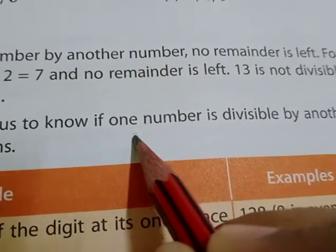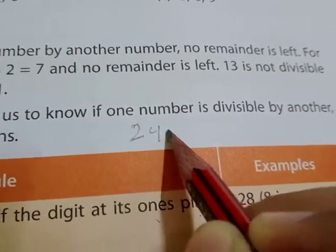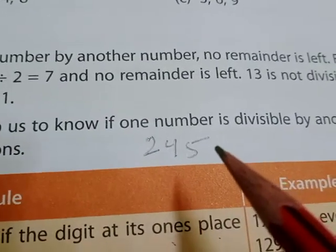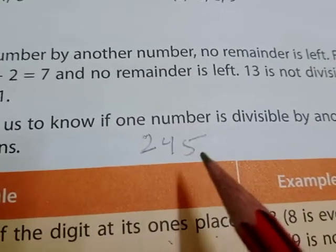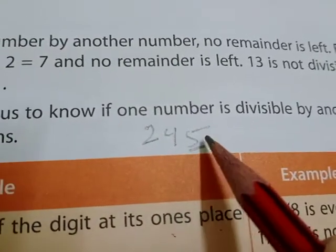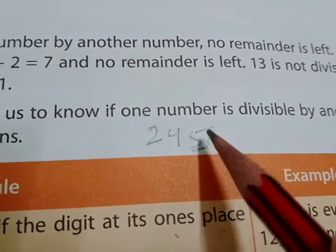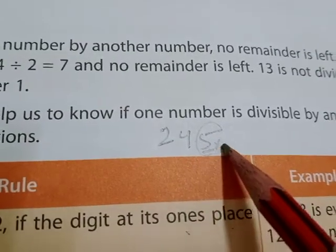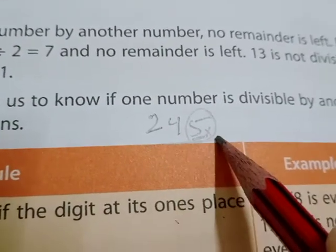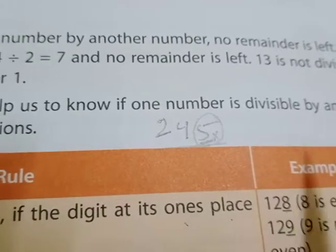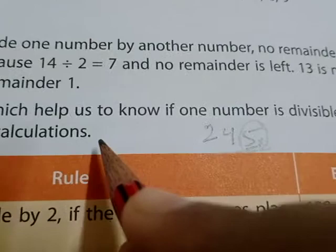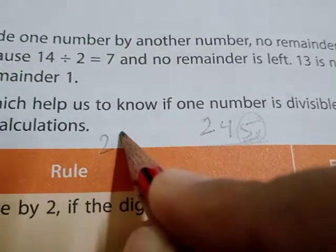Let's check another number: 245. In 245, what is in the one's place? It is five. Five is not an even number, so 245 is completely not divisible by two.